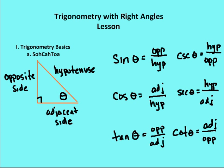If I were to change the reference angle — just change it from that angle to this angle here — then my adjacent side and my opposite side are now reversed. So this becomes my opposite side and this becomes my adjacent side.